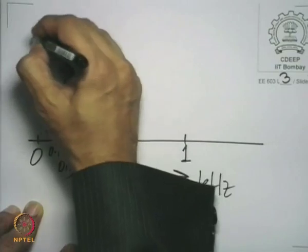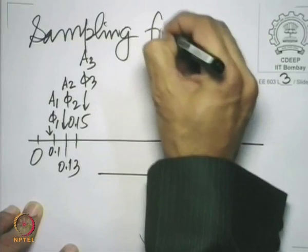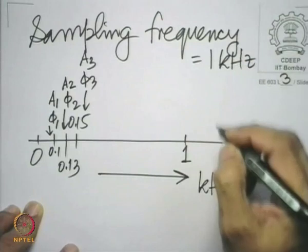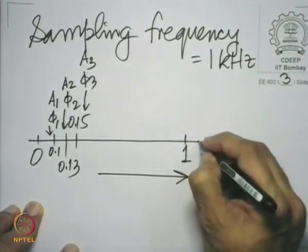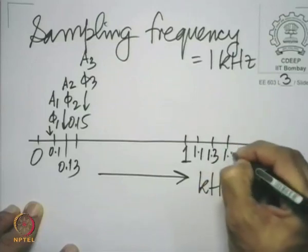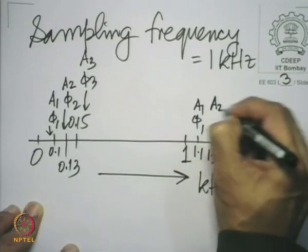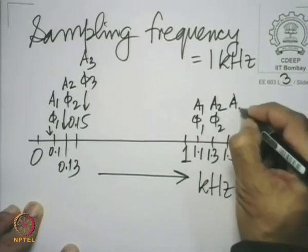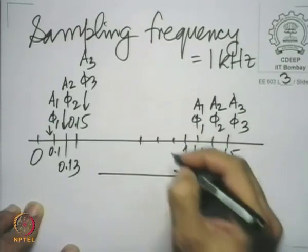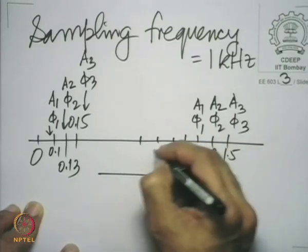If the sampling frequency is 1 kilohertz, then you get a copy around 1 kilohertz: you get 1.1, 1.13, and 1.15, with amplitudes and phases A1 φ1, A2 φ2, A3 φ3 respectively. And you also get copies behind: 0.9 and 0.85.